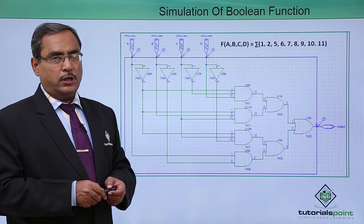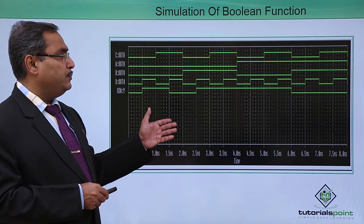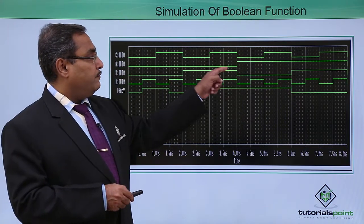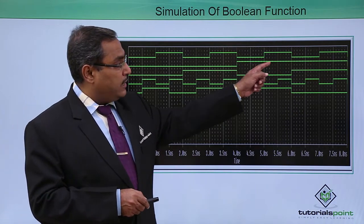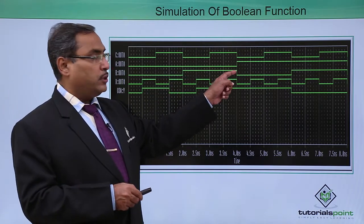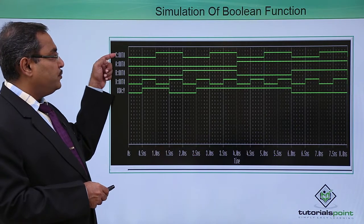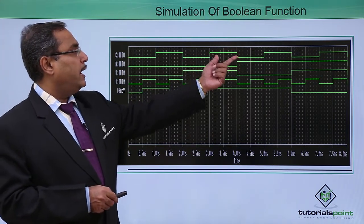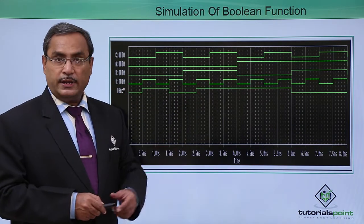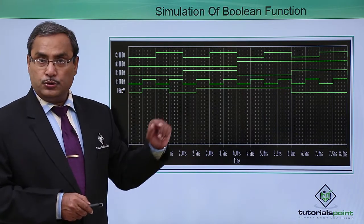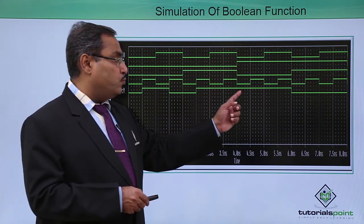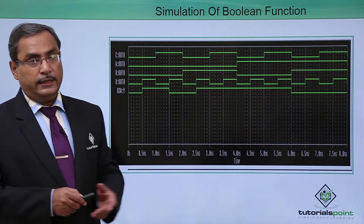Let us go for the simulation output now. This is the respective simulation output. A is the MSB — for 8 combinations it is having low and the next 8 combinations it is having high. B is low for 4 combinations then high, then low then high. C is low for 2 combinations then high, alternating. D is the LSB, oscillating between low and high. The output was 0, 1, 1, 0, then 0, then 7 times 1 and then 4 times 0 — we are getting the output accordingly.